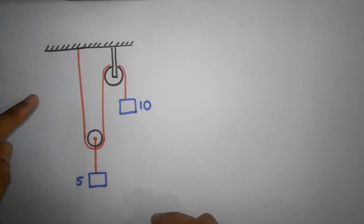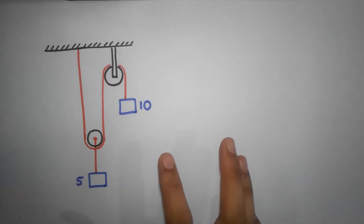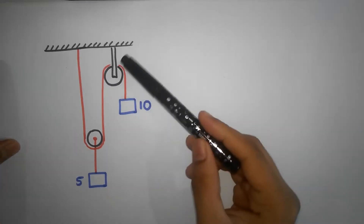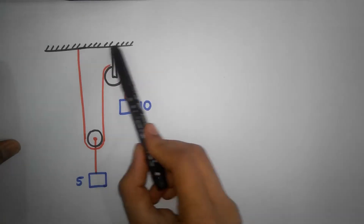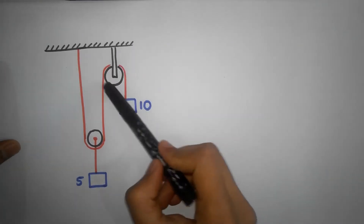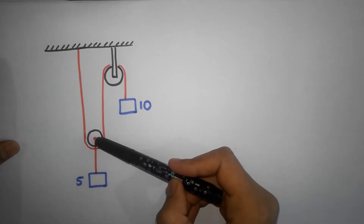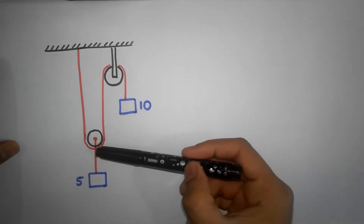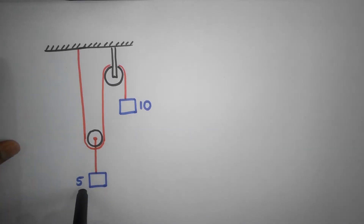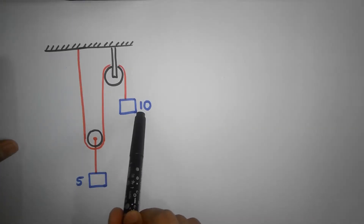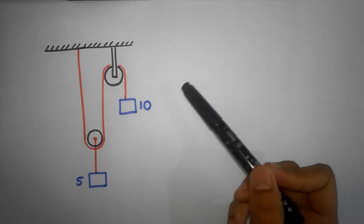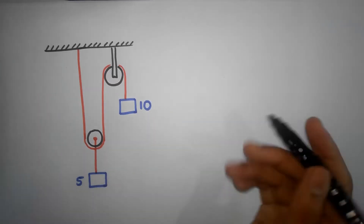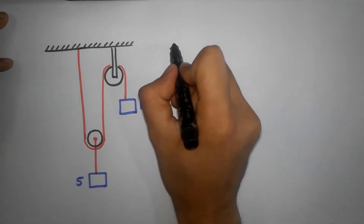Let's take another example of constraint motion. Here we have a double pulley system. One pulley is rigidly fixed to the ceiling so it can't move up and down, it can only rotate. The second pulley is free to move up and down. To that second pulley there's a mass attached. This mass is 5 kilograms and this other mass is 10 kilograms. The question is: what is the acceleration of the 5 kg and the 10 kg with respect to the inertial reference frame?